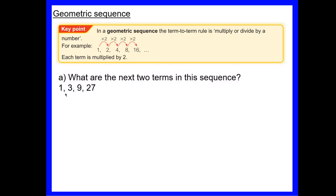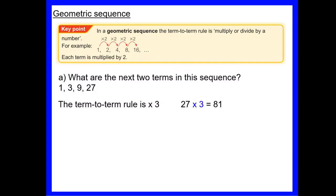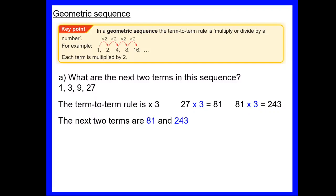Let's find the next two terms in this sequence: 1, 3, 9, 27... We can see it's not going up by the same amount each time, so it's not arithmetic. To get from 1 to 3 we times by 3, from 3 to 9 we times by 3, from 9 to 27 is times by 3. So the next two terms are 27 × 3 = 81, and 81 × 3 = 243.